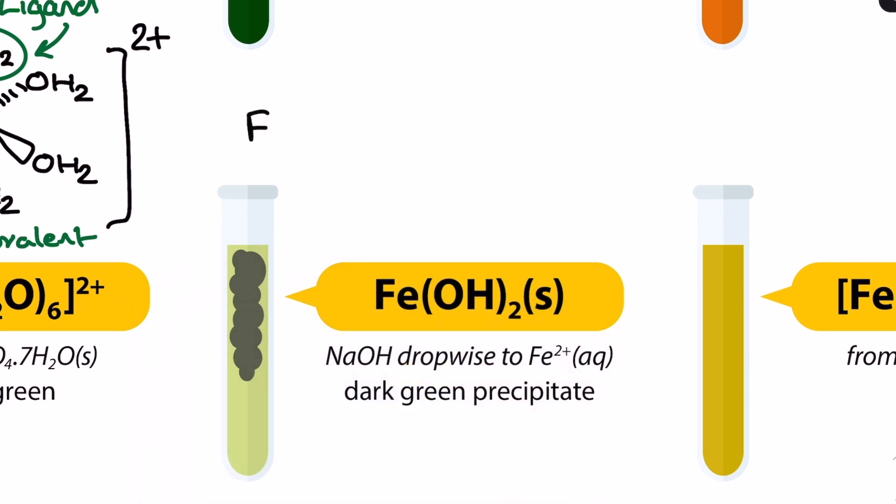Here we have our first precipitation reaction. The iron II ion from before will react in this ionic equation with some dropwise NaOH represented by the OH- aqueous in the equation to form a dark green precipitate. There's no further reaction here if we use excess OH- like with some of the ions on this table.